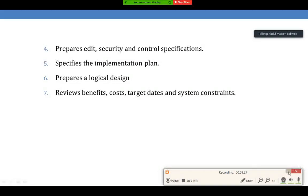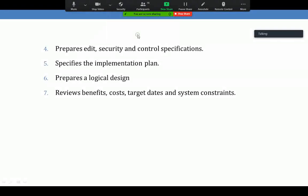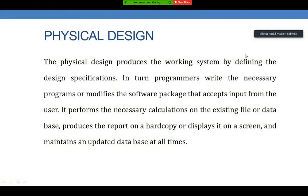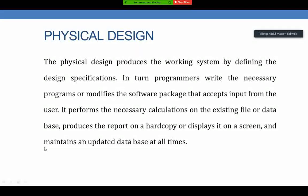The second part of system design is physical system design. Physical system design focuses on design specification — what input and output devices are to be used, where to store the data, and what the backup policy is. It produces the working system by defining design specifications, where programmers write necessary programs that modify the software package, accept user input, perform necessary calculations, convert input into output, and produce outputs in hard copy or on screen.